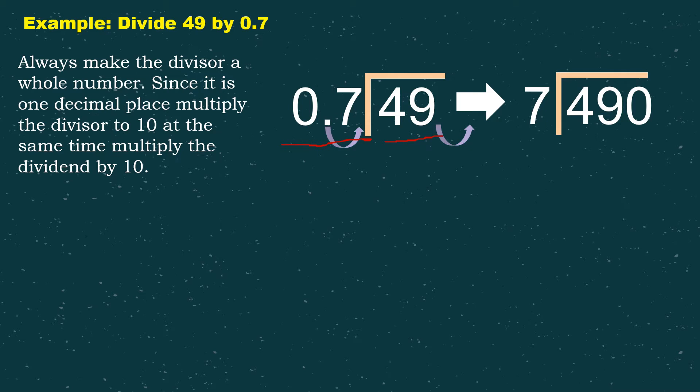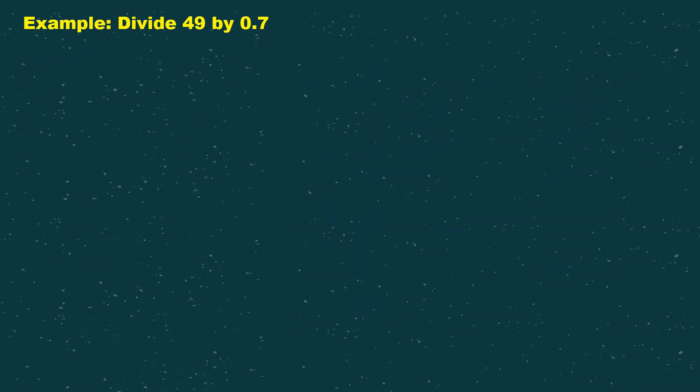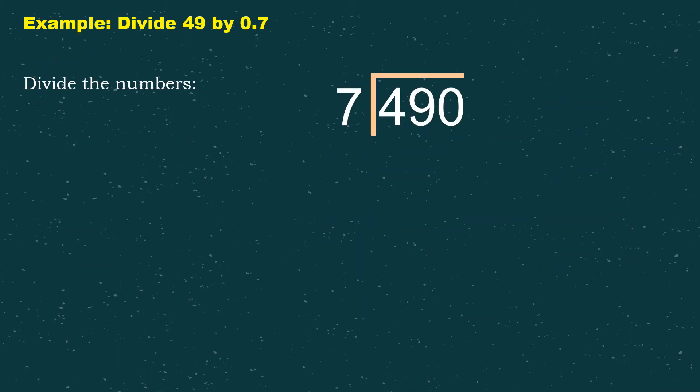So in this case, 0.7 will become 7 and 49 will become 490. After we have already made the divisor a whole number, we just need to divide the numbers as if they are whole numbers.